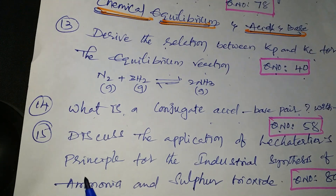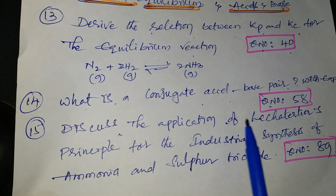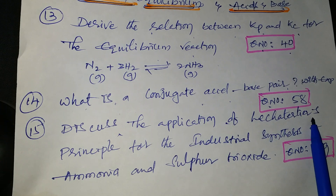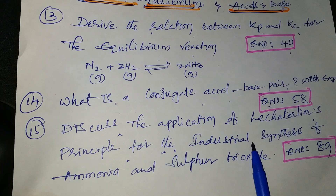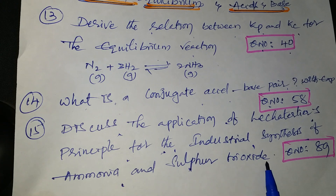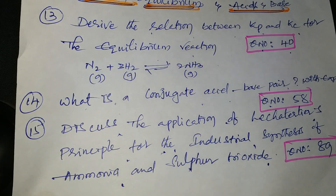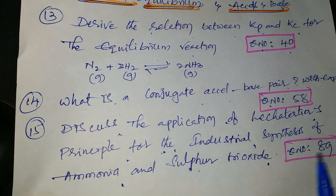Next question: discuss the application of Le Chatelier's principle for the industrial synthesis of ammonia and sulfur trioxide. From chemical equilibrium I gave three important questions — the Le Chatelier's principle question being among the most important.